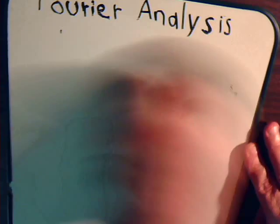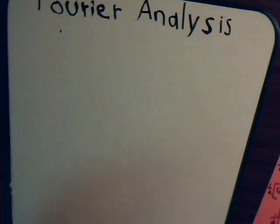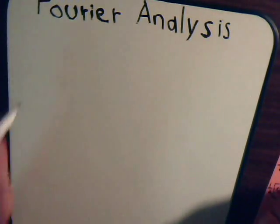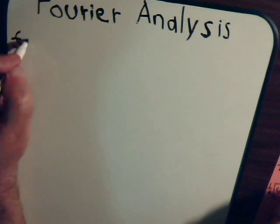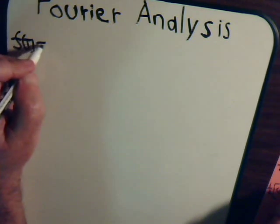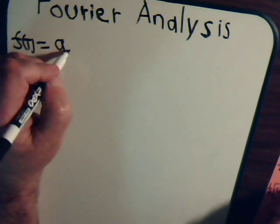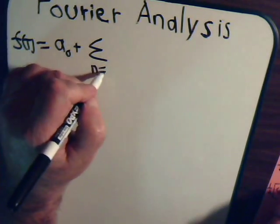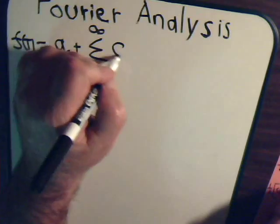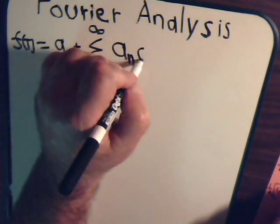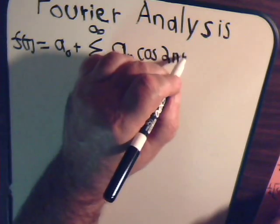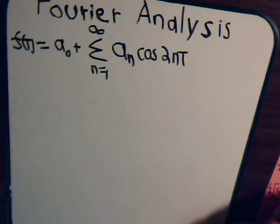So what we've accumulated so far then, our expansion formula is f of t equals a zero plus the sum from n equals one to infinity of a sub n cosine two n t. And since b sub n is zero, we'll just stop right there.